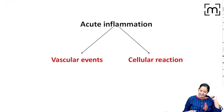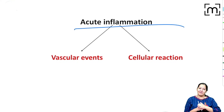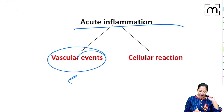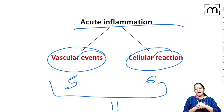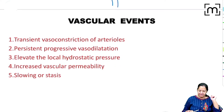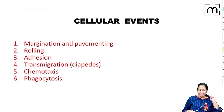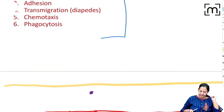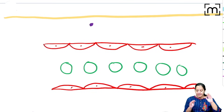Let's start the events of acute inflammation. I can divide the entire acute inflammation into five vascular events and six cellular events — total 11 events. You can see the five vascular events and the six cellular events in the master diagram. In this diagram I am going to teach all 11 events: the five vascular and six cellular.